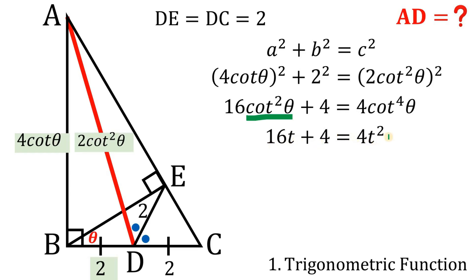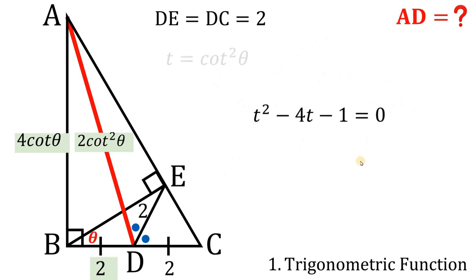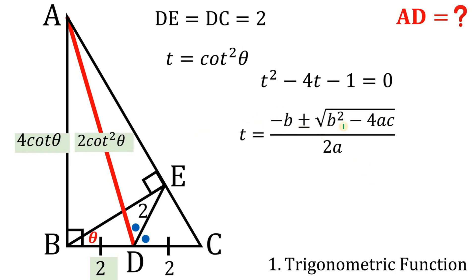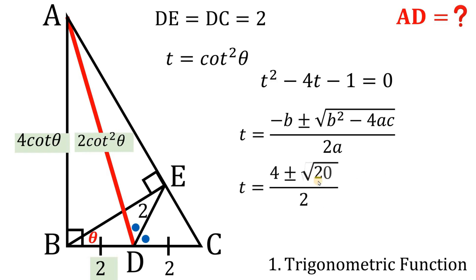Setting this equation to zero and dividing all terms by 4 gives: t squared minus 4t minus 1 equals 0. Using the quadratic formula with a=1, b=−4, c=−1: t equals (4 ± √(16 + 4)) / 2, which equals (4 ± √20) / 2, and √20 simplifies to 2√5.